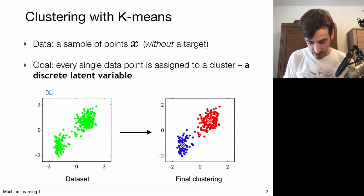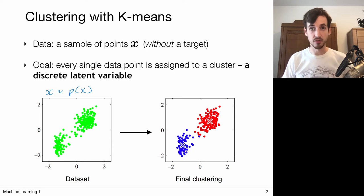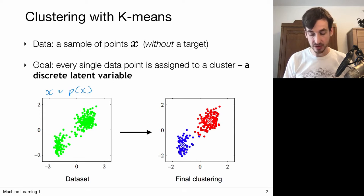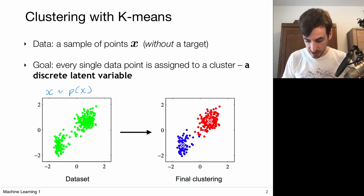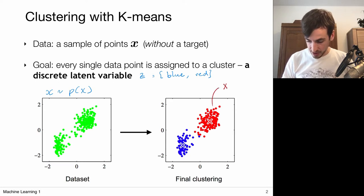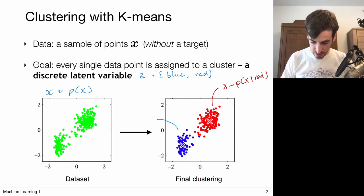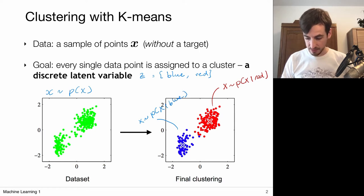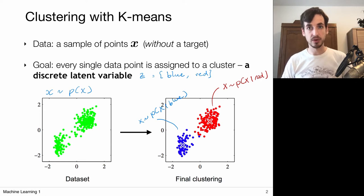All our observations x are drawn from this probability distribution for x. Sometimes a point lies over here, sometimes over here, but generally we see these two clusters. We assume a discrete latent variable z which can take on two values — blue class or red class. A data point is either drawn from the conditional x given the red class, or the conditional x given the blue class, where points from the blue class are most likely to occur around the blue cluster center.